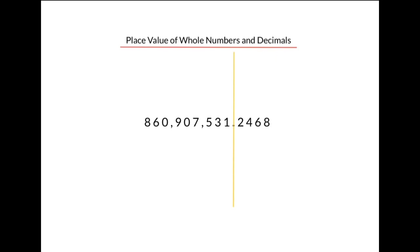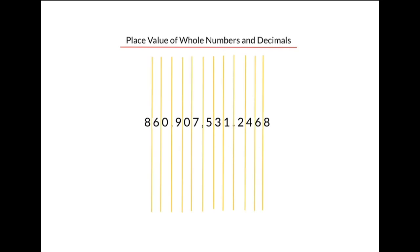The decimal divides the whole part of the number from the fractional part of the number, but each digit also occupies a specific place in the number. Starting to the left of the decimal: the one occupies the ones place, the three occupies the tens place, and the five occupies the hundreds place. To the right of the decimal, the two occupies the tenths place and the four occupies the hundredths place.